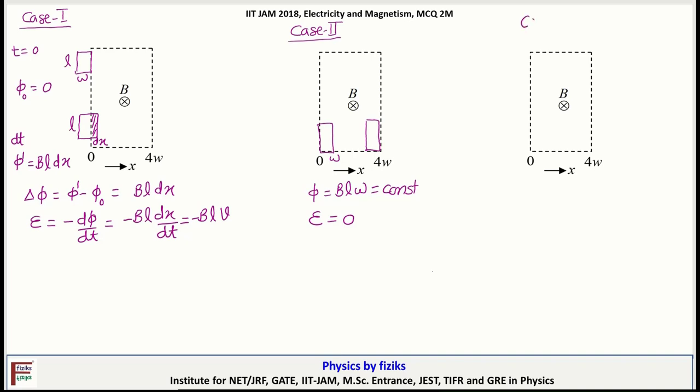Now see case 3. In case 3, assume at t is equal to 0, front end is at x is equal to 4W. So initial flux phi 0 will be B L dx.